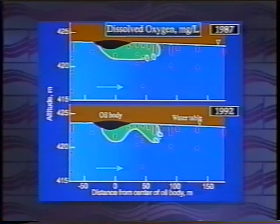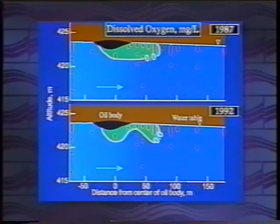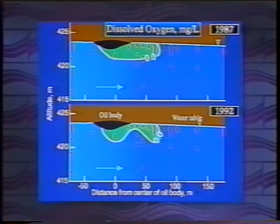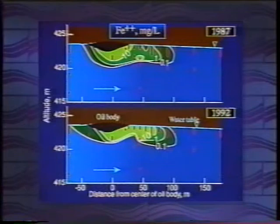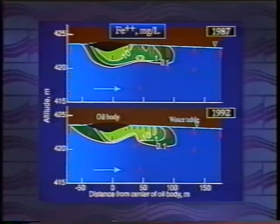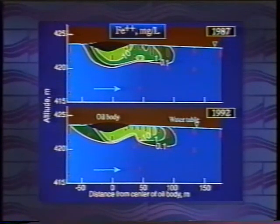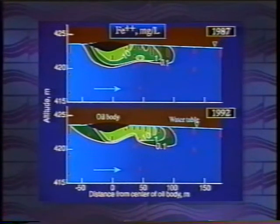Looking at dissolved oxygen, the anoxic plume has changed very little with time. There's a freshening zone where uncontaminated water is moving under the plume, but the anoxic plume has not migrated far down gradient. Ferrous iron shows the most change over time — the zone of high concentration (~10 mg/L) has migrated down gradient, yet the overall extent of the iron zone has not changed much, correlating well with the anoxic zone. Iron that is mobilized precipitates out rapidly once it encounters oxygen.